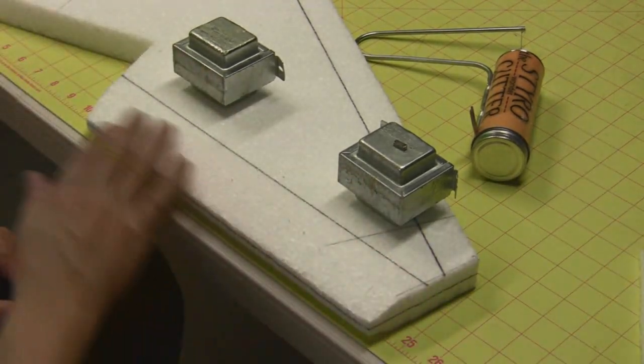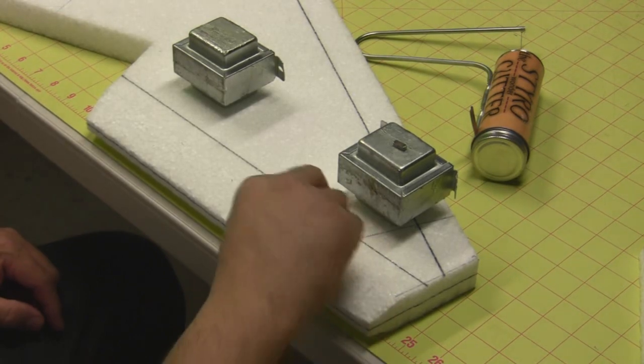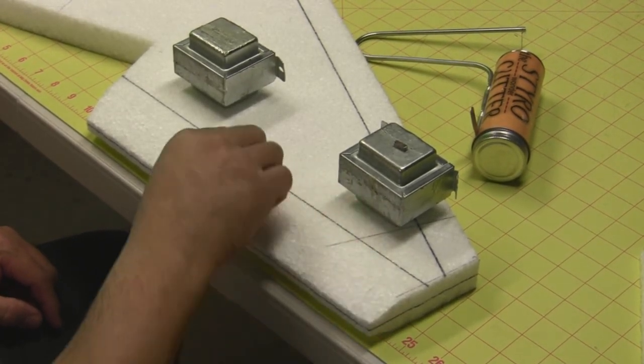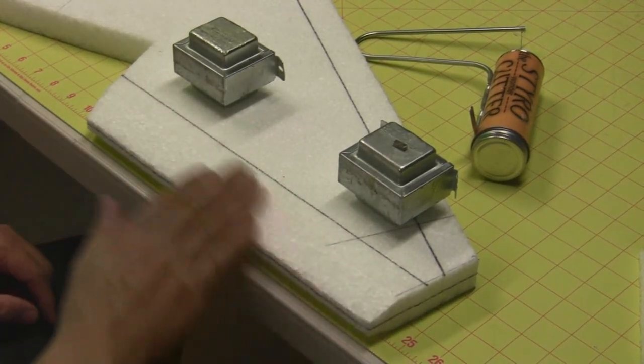And that's a pretty clean cut. There may be a couple little burrs of foam on there. They usually just come off pretty easily. You just rub them off and they'll fall right off.